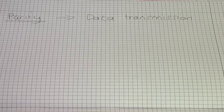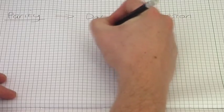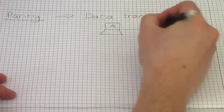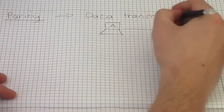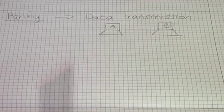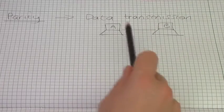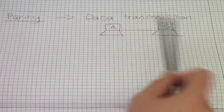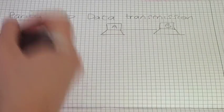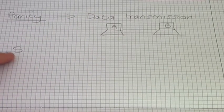So what we're going to talk about today — we've got two devices. This can be device A, this can be device B, and they are connected together. What we want to do is transmit some data between the two of them. The data that we're going to transmit is the letter S — specifically the capital letter S.